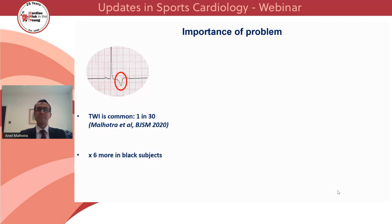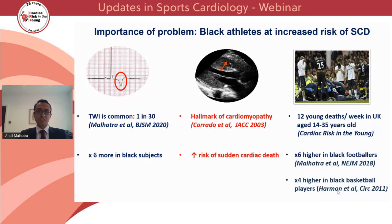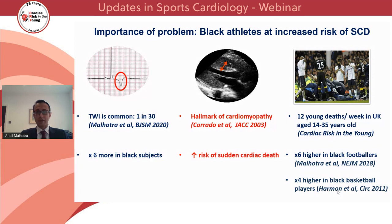I'd like to start by highlighting why we're revisiting black athletes' hearts, starting with the most common repolarisation challenge of T-wave inversion. This affects one in 30 young athletes and is six times more common amongst black than white people. T-wave inversion is present in cardiomyopathy, which increases the risk of exercise-induced sudden cardiac death up to threefold. This is a tragic event affecting at least 12 young people in the UK alone every week, with huge socioeconomic and emotional impact. We reported a six-fold higher rate of sudden cardiac death amongst young black footballers, corroborated by a four-fold higher rate amongst American black basketball players. This disparity in sudden cardiac death rates is the first problem.